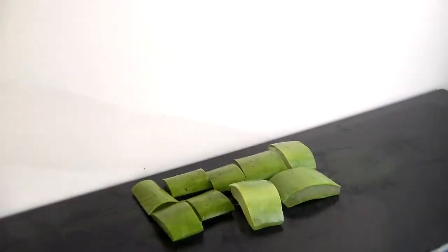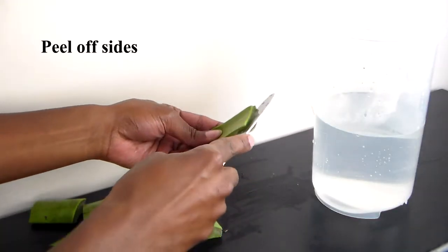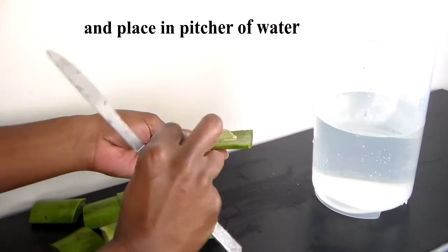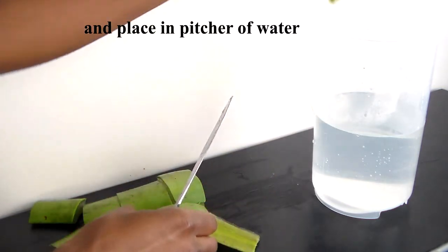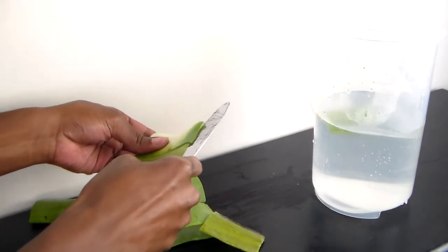Once I was done, I was left with nine pieces. Now for each piece I'm going to peel off the skin using a butter knife. I'm gliding the butter knife as close as possible to get most of the gel, and once all of the skin is off, I'm placing it into the pitcher of water.